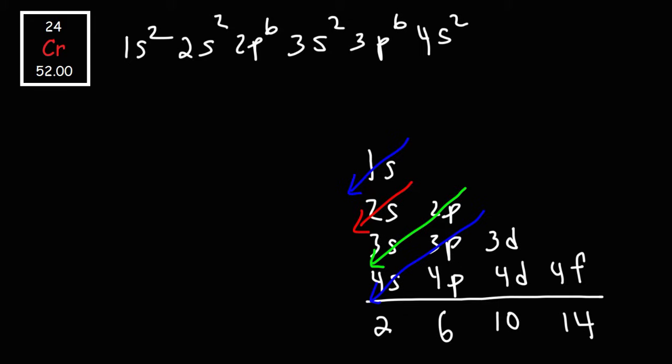Right now, if we were to add the exponents of the configuration, this so far will sum up to 20, so we'll need four more. After 3S, we'll move on to the 3D sublevel. We're going to stop at 3D4 because that's going to give us a total of 24 electrons.